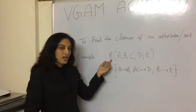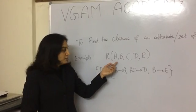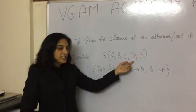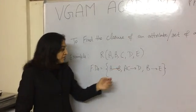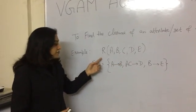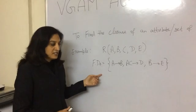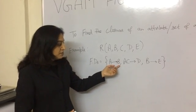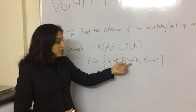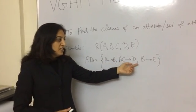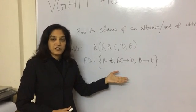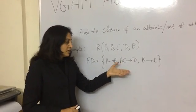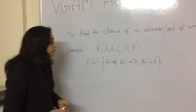Say there is a relation R with attributes A, B, C, D, and E. Here are the functional dependencies: A uniquely determines D, AC uniquely determines D, and B uniquely determines E. These are the functional dependencies which are given to us.